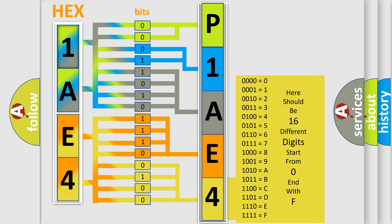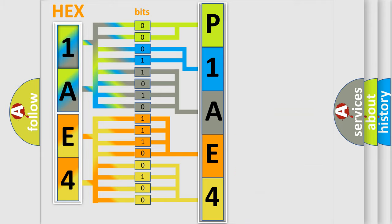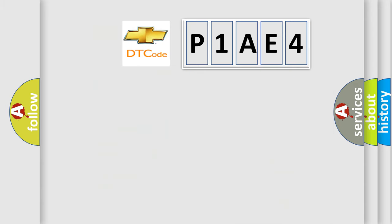We now know in what way the diagnostic tool translates the received information into a more comprehensible format. The number itself does not make sense to us if we cannot assign information about what it actually expresses. So, what does the diagnostic trouble code P1AE4 interpret specifically for Chevrolet car manufacturers?